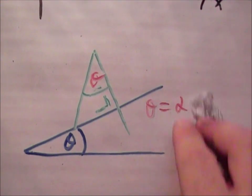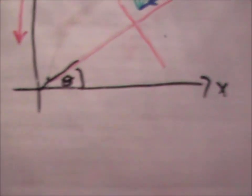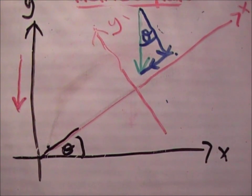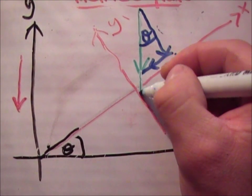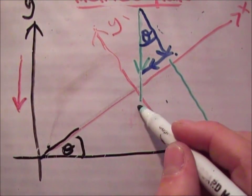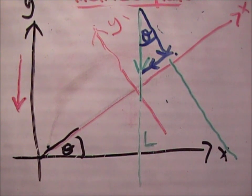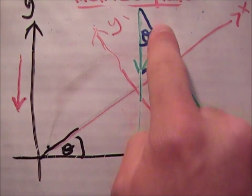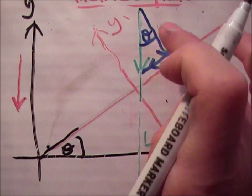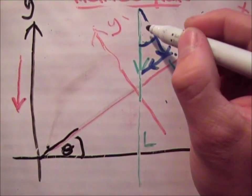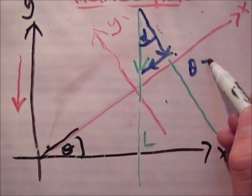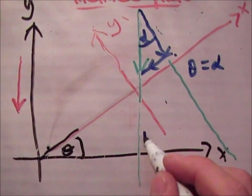So if we look at gravity, gravity is bisecting the inclined plane at a right angle. That means this angle theta is also this angle up top here. So if I call this alpha, I'm now able to say theta equals alpha because they're bisecting at a right angle.